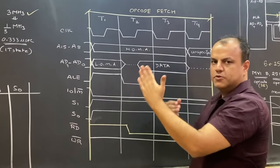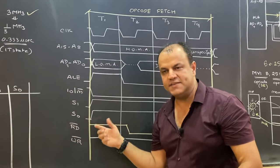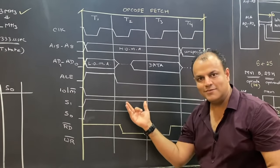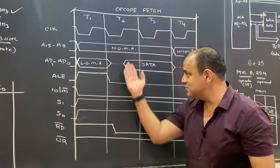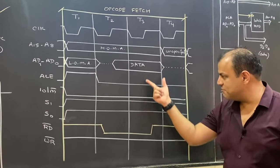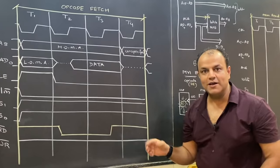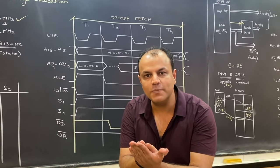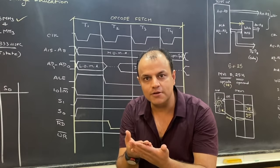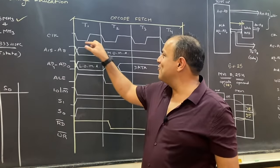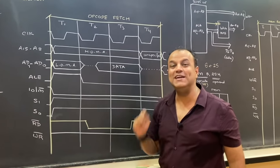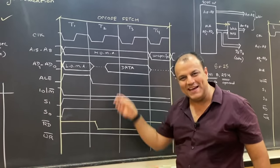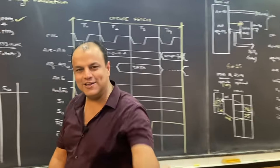हर clock pulse processor को बोलता है — अब कुछ करो। मतलब इस वक्त processor का state ऐसा है, इस bus में यह value है, यह signal high है, यह signal low है। अगले pulse में बदलाव आ गया — कुछ और हो रहा है। फिर अगले clock pulse में वापस बदलाव आ गया। मतलब हर clock pulse में processor की हालत बदलती है — state of the processor changes, there is a transition from one state to another state। इसलिए clock pulse को बोलते हैं T state — T का मतलब है transition।